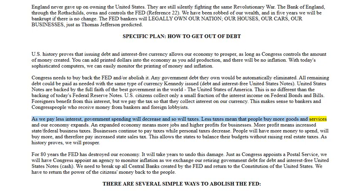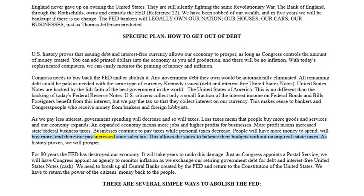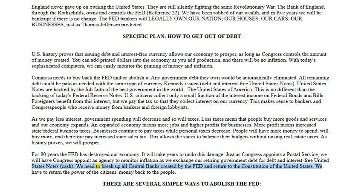Less taxes mean that people buy more goods and services and our economy expands. An expanded economy means more jobs and higher profits for businesses. More profit means increased state and federal business taxes. People will have more money to spend and will buy more, therefore paying increased state sales tax. This allows the states to balance their budgets without raising real estate taxes. As history proves, we will prosper. For 80 years the Fed has destroyed our economy. We need to break up all central banks created by the Fed and return to the Constitution of the United States — we have to return the power of the citizens' money back to the people.